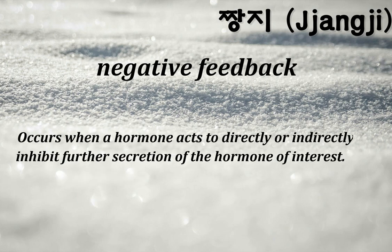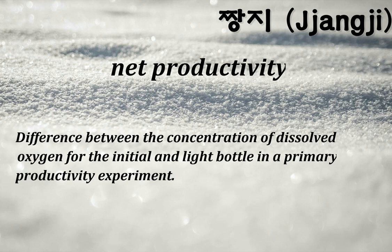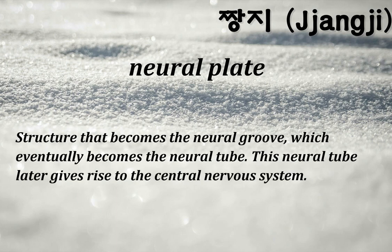Negative feedback: occurs when a hormone acts to directly or indirectly inhibit further secretion of the hormone of interest. Nephron: the functional unit of the kidney. Net productivity: difference between the concentration of dissolved oxygen for the initial and light bottle in a primary productivity experiment. Neural plate: structure that becomes the neural groove, which eventually becomes the neural tube; this neural tube later gives rise to the central nervous system.